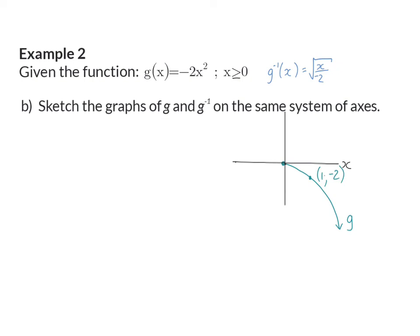Next, to draw the inverse, I'm going to start off adding the line y equals x, and this is the line around which I will then reflect the function I've drawn. And if I take the coordinate that I have and swap around x and y, I will have the coordinate minus 2, 1, which will then be on my inverse graph.